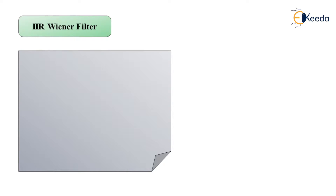Our topic is the IIR Wiener filter. Previously we constrained the filter to be FIR (finite impulse response) and obtained a set of M linear equations for the optimum filter coefficients. Now we allow the filter to be infinite in duration — an IIR filter — with the corresponding data sequence also being infinite. The filter output y(n) is expressed as: y(n) = summation from k=0 to infinity of h(k) multiplied by x(n−k).